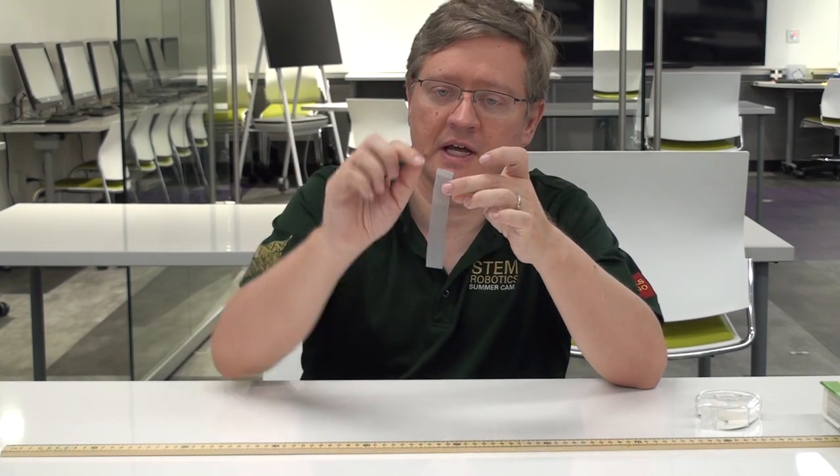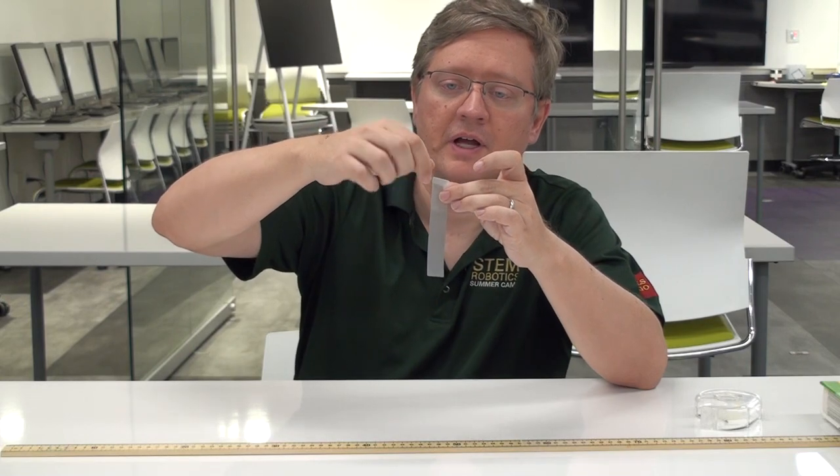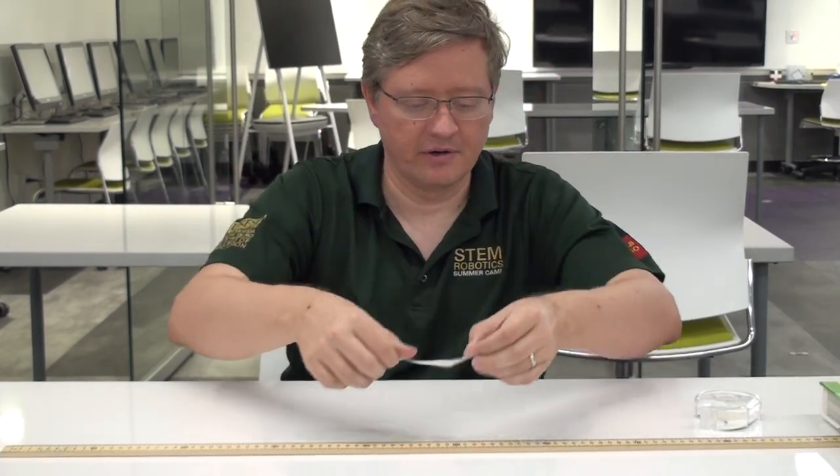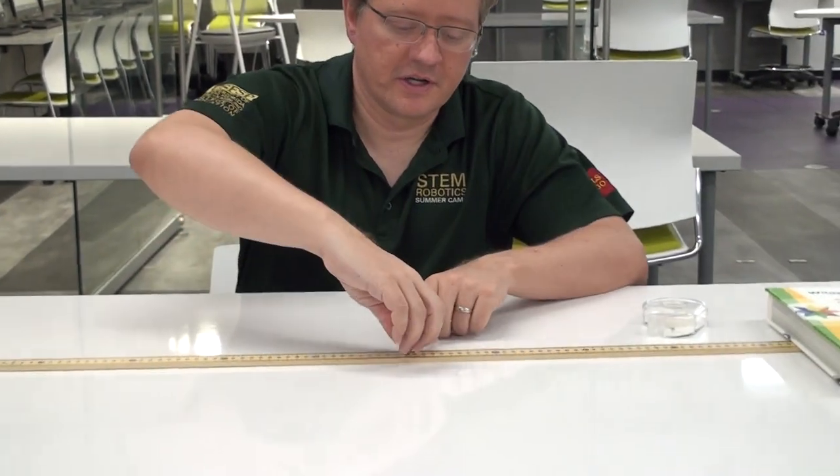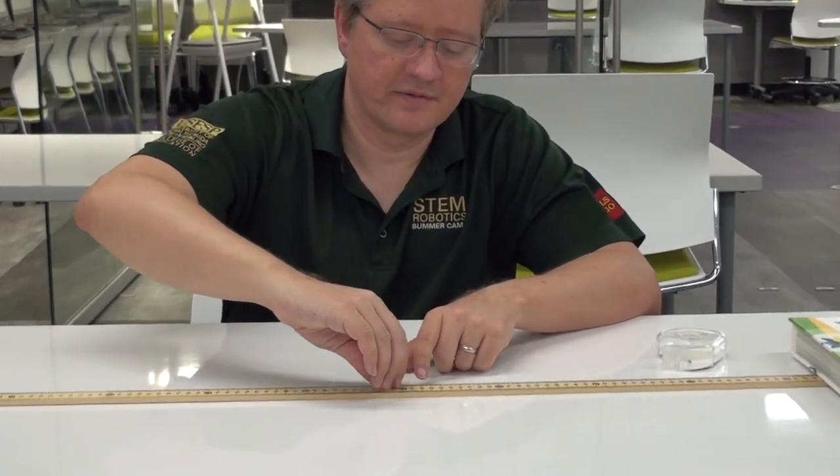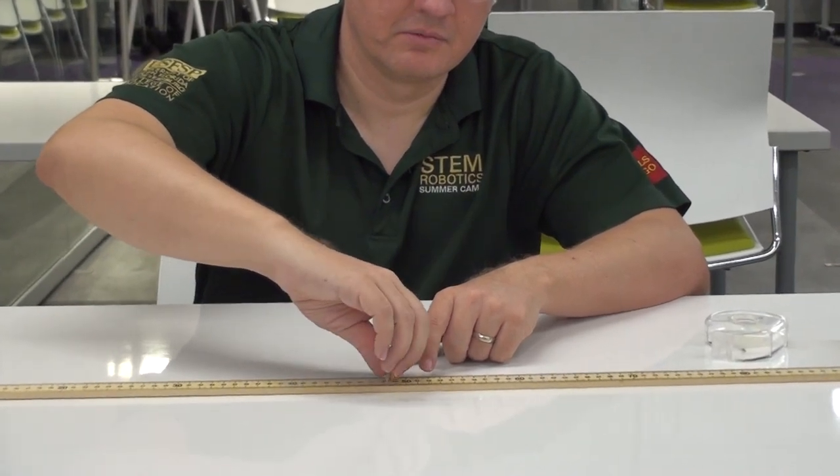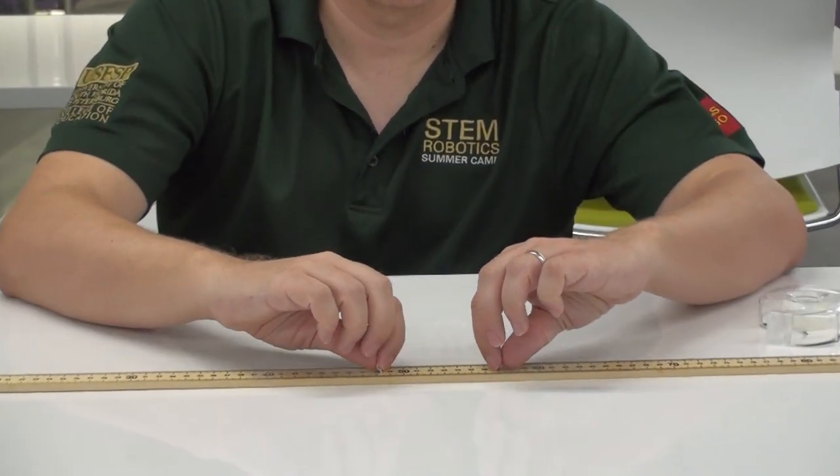You take the edge of the tape and fold it over, and so this way this gives you something that you can hold on to. Now I already have one on there, but you can see now with a little flap it's very easy to pull. So what you're going to do is you're going to start with two of them.